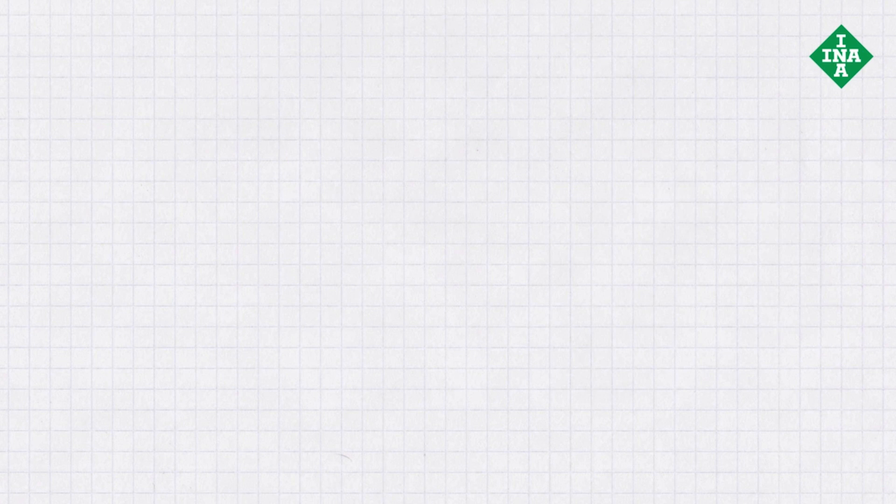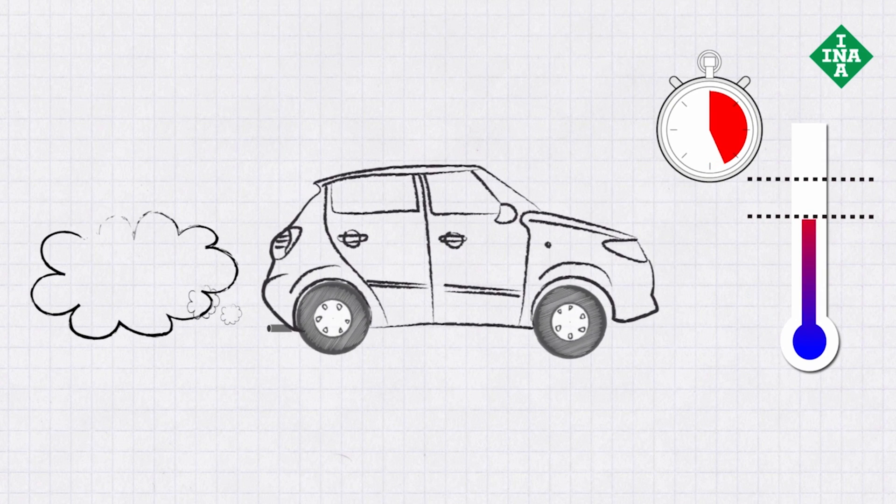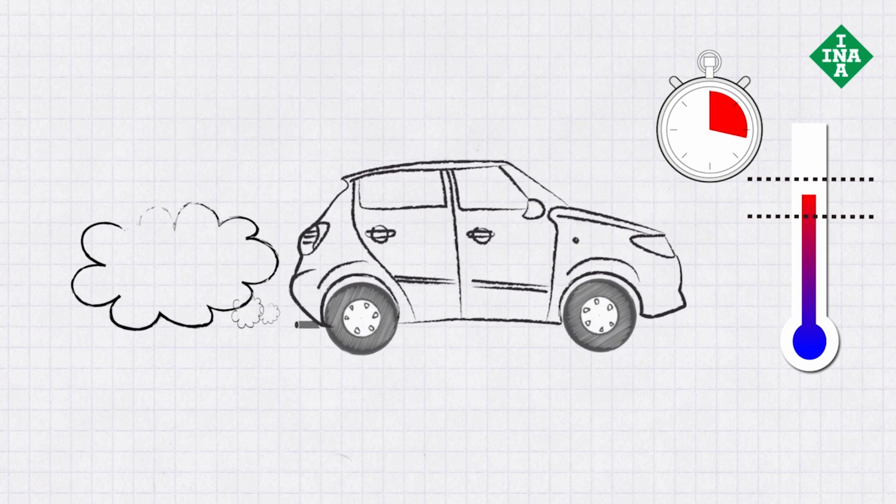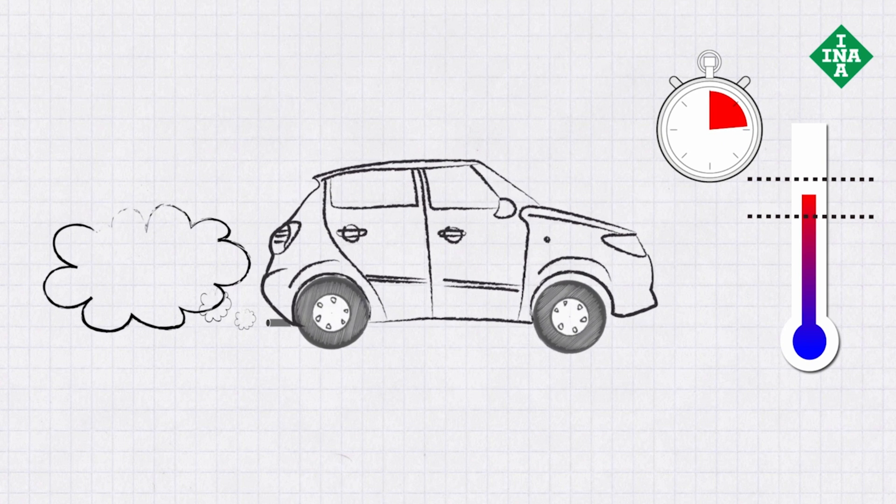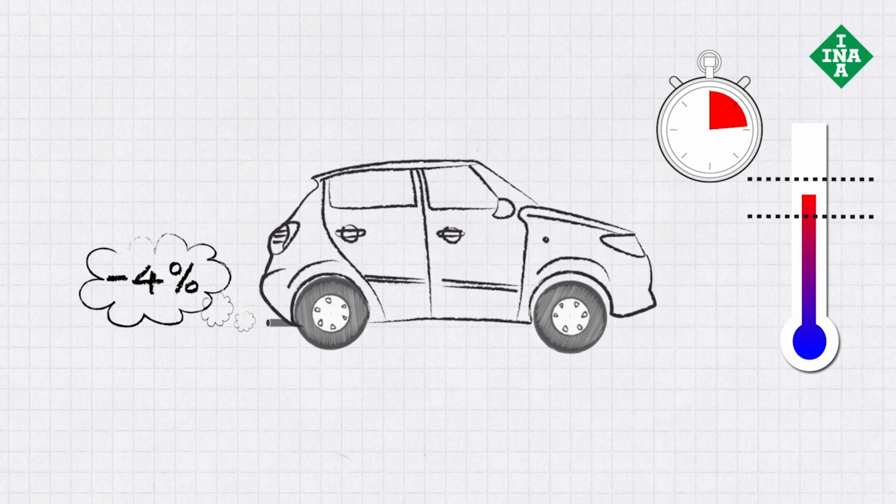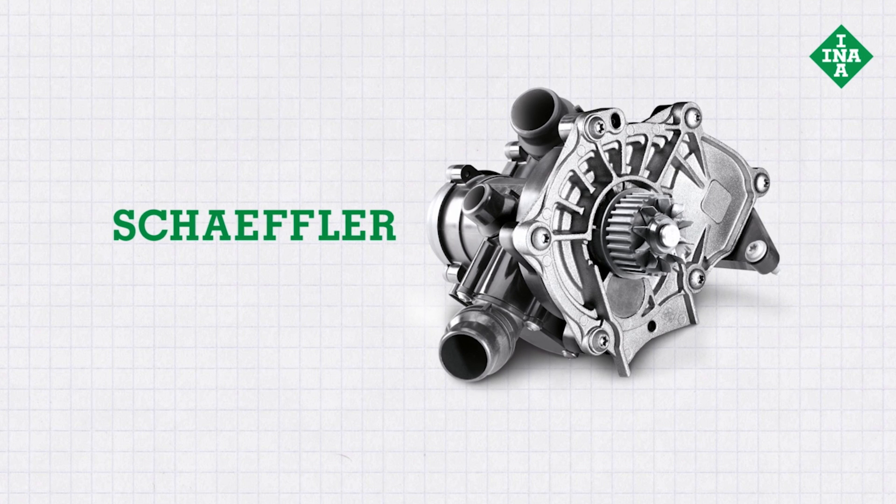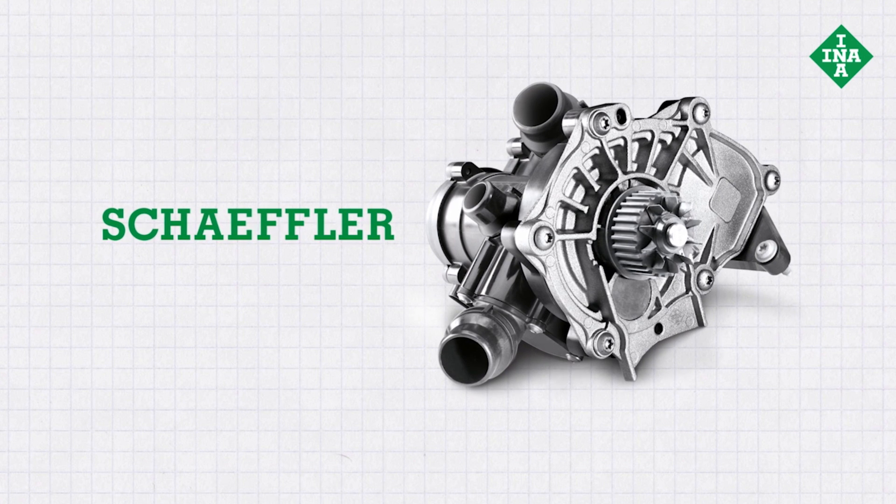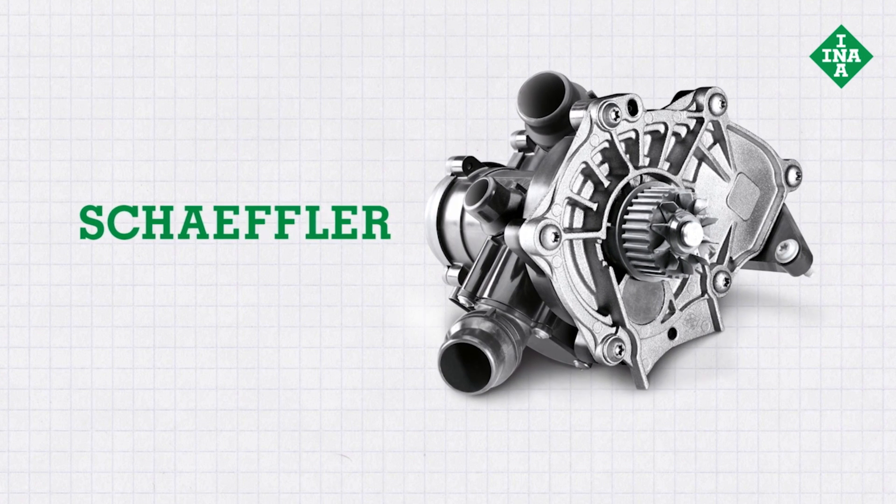This approach halves the time taken for the engine to reach its optimum temperature and enables the vehicle interior to heat up more quickly. It also reduces the vehicle's CO2 emissions by 4%. This innovative thermal management module is exclusively available in the aftermarket from Scheffler under the ENA brand.